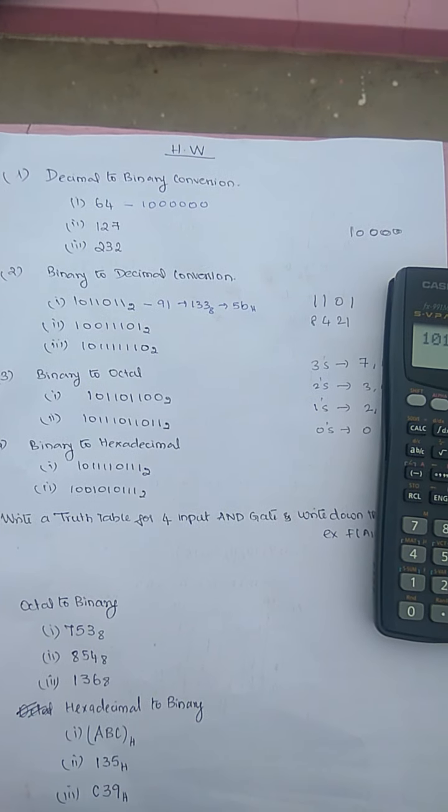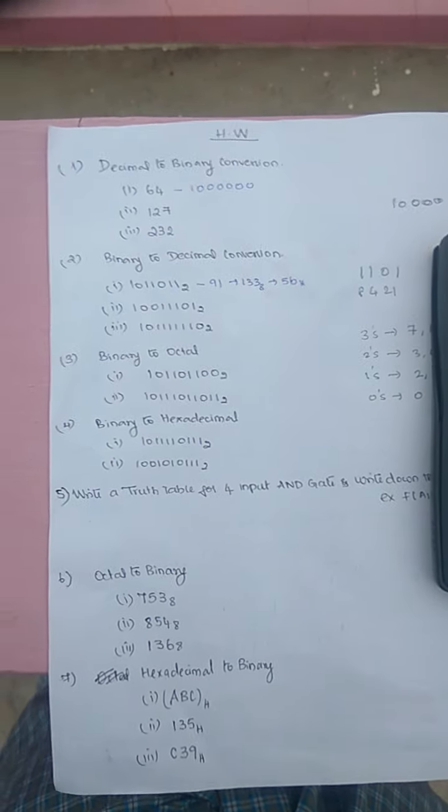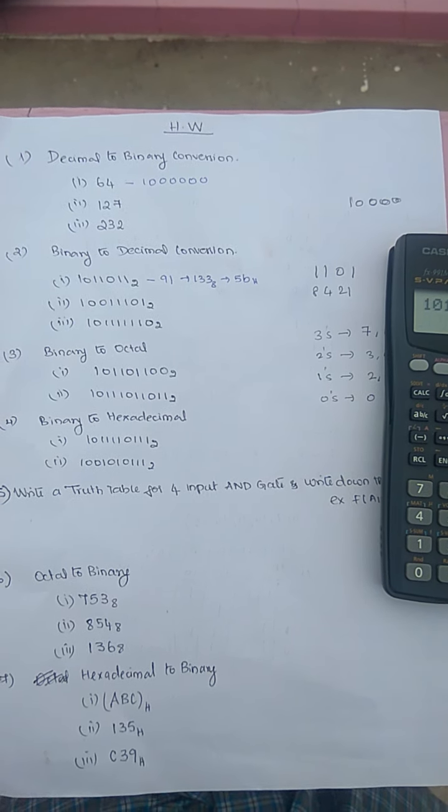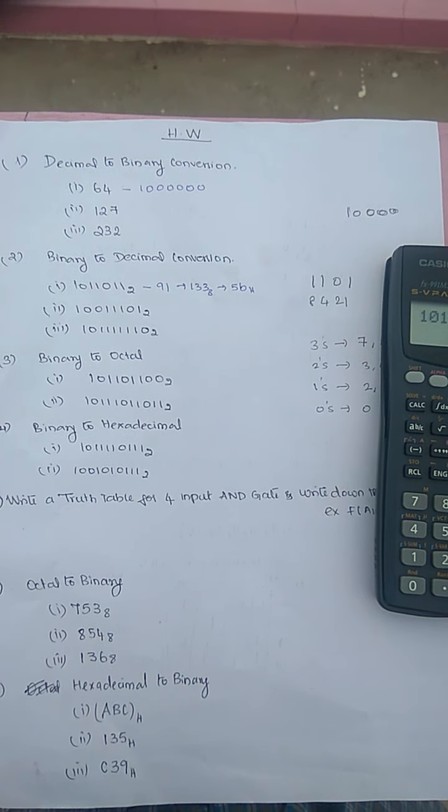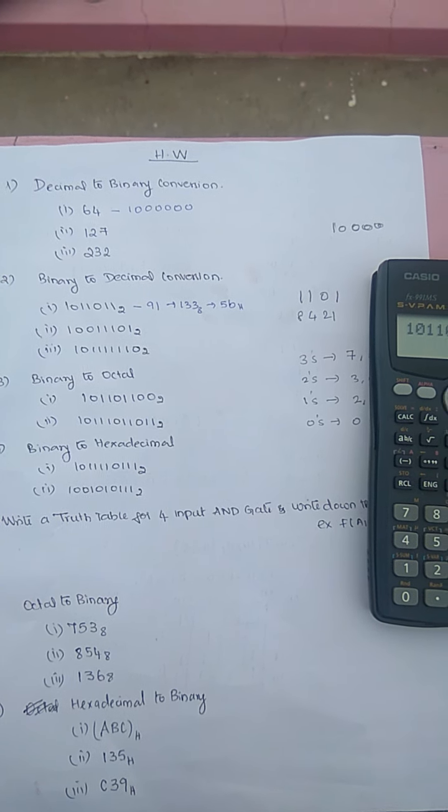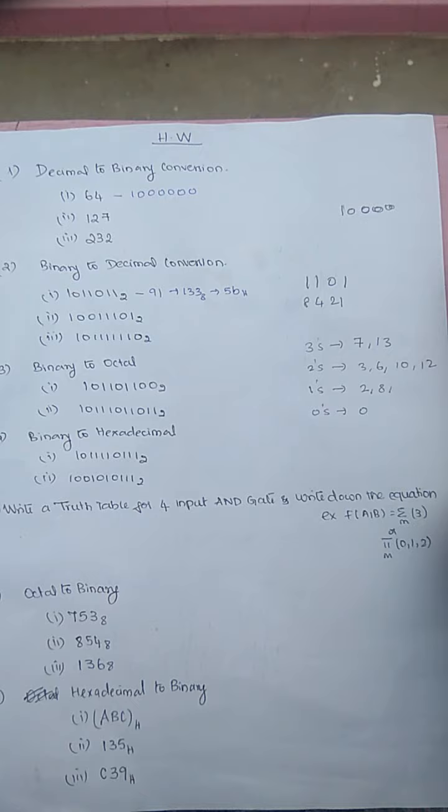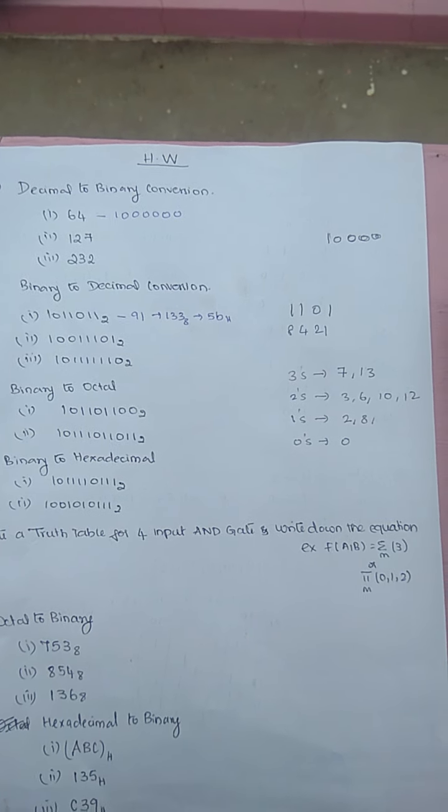You have to substitute the values from 0000 to 1111. Then to write the equation f(A, B, C, D) is equal to summation m15 or capital M 0 to 14.